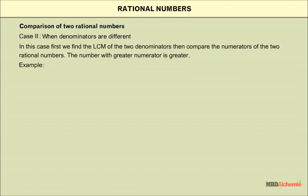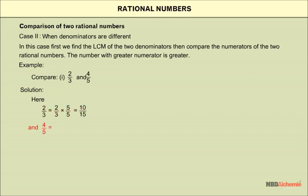Here is an example. We need to compare 2/3 and 4/5. The LCM of 3 and 5 is 15. Multiplying 2/3 by 5, we get 10/15. Multiplying 4/5 by 3, we get 12/15. Now, since 12 is greater than 10, we have 4/5 > 2/3.